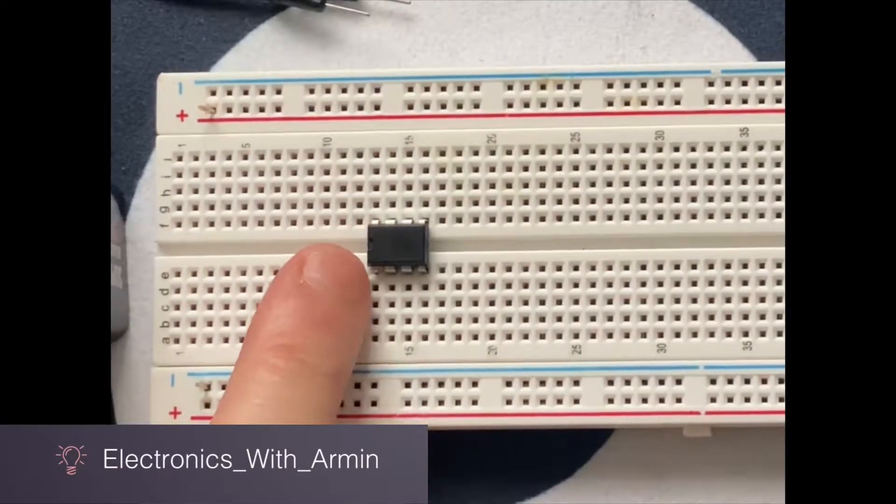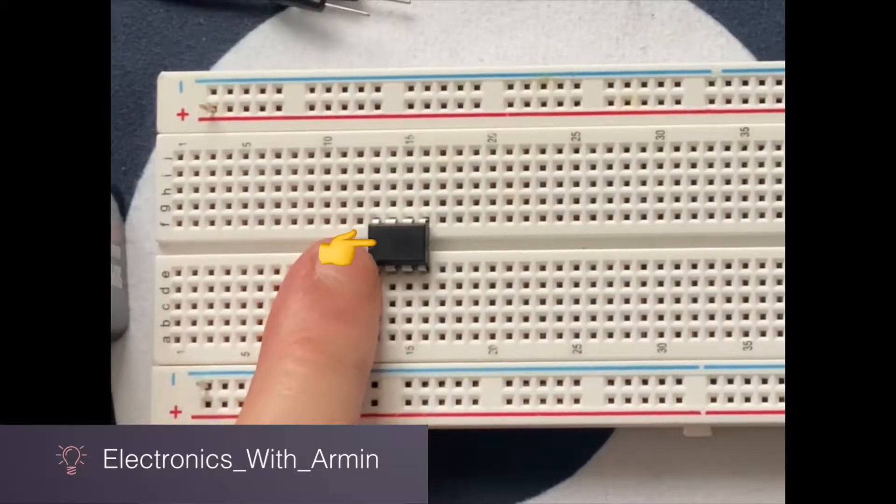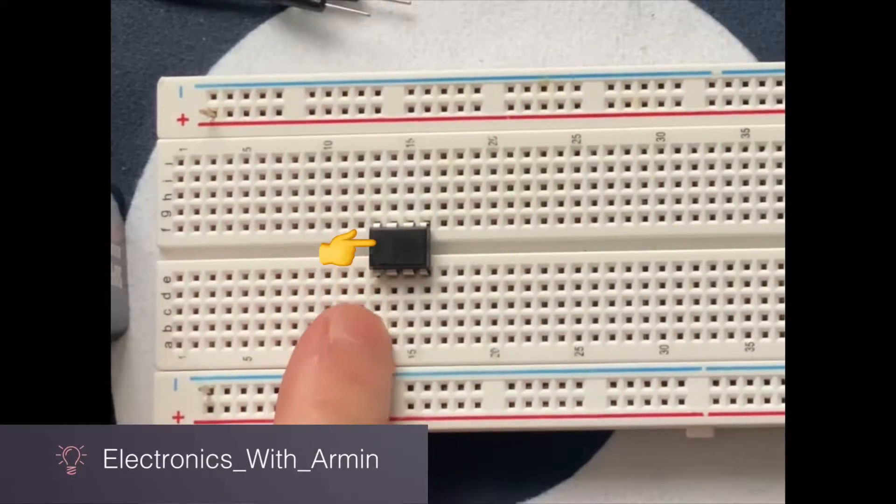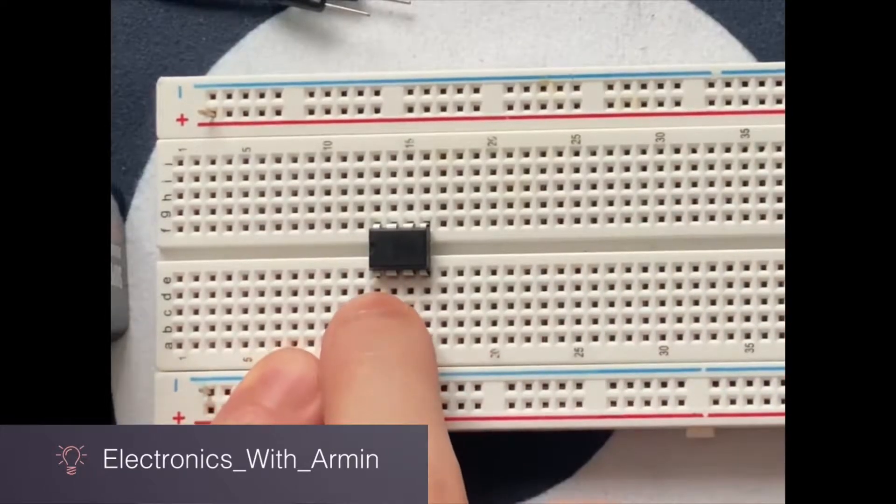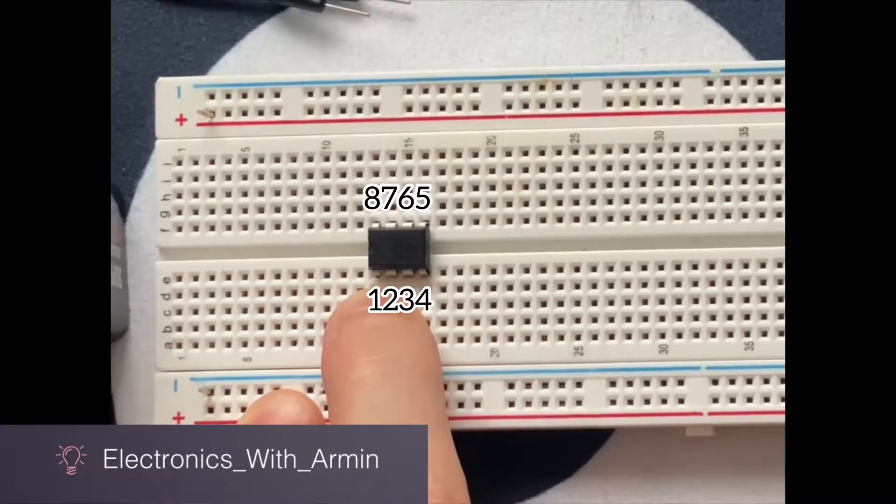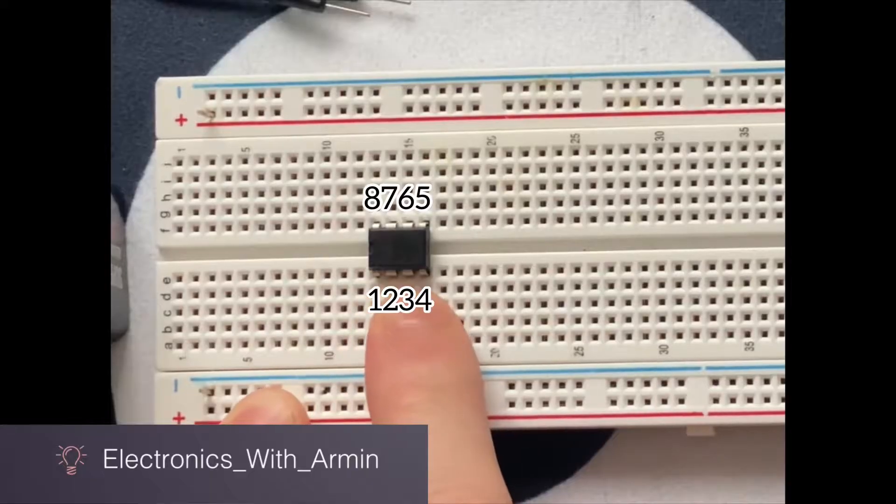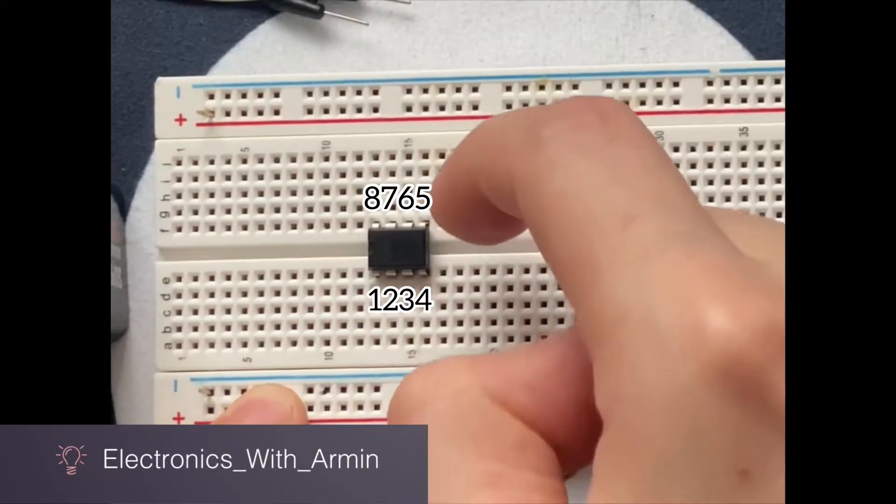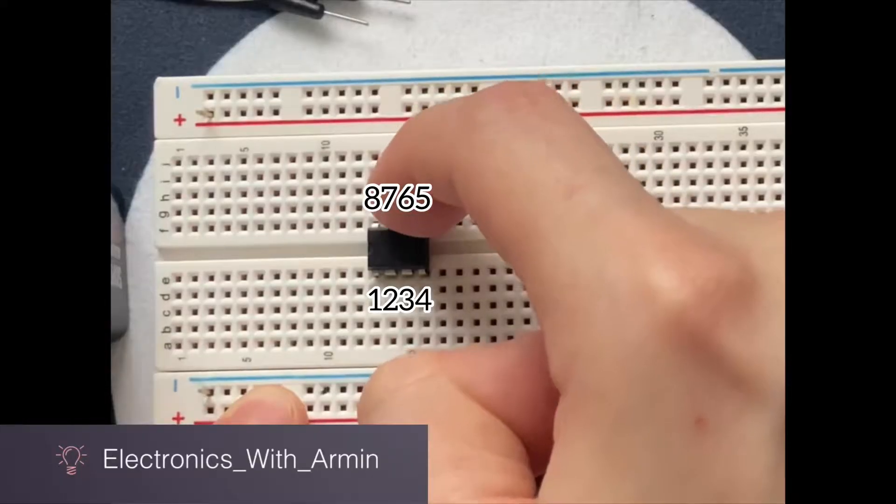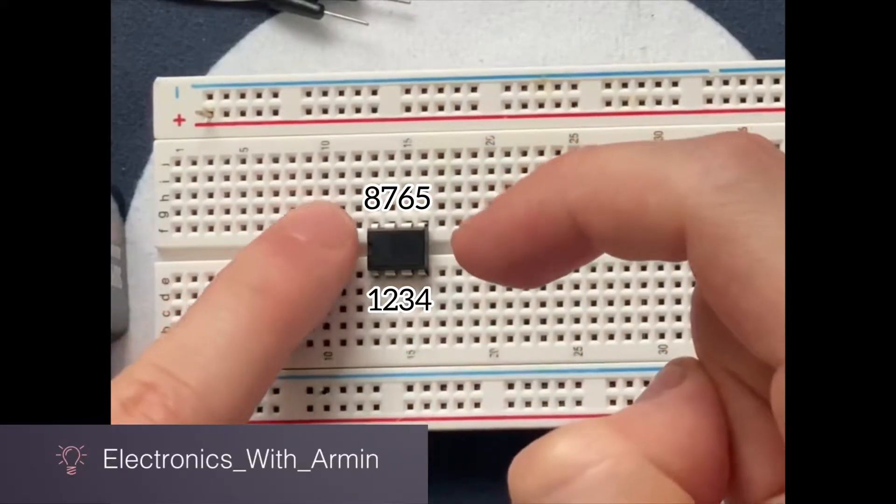As you can see, there is a notch on the left side of the IC, and from this point we can understand that this one is going to be our first pin, pin 2, pin 3, pin 4, top right is going to be pin 5, 6, 7, and 8.